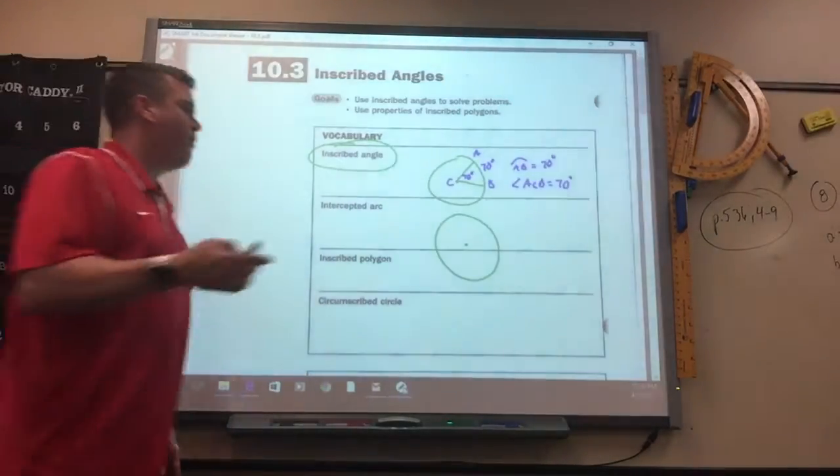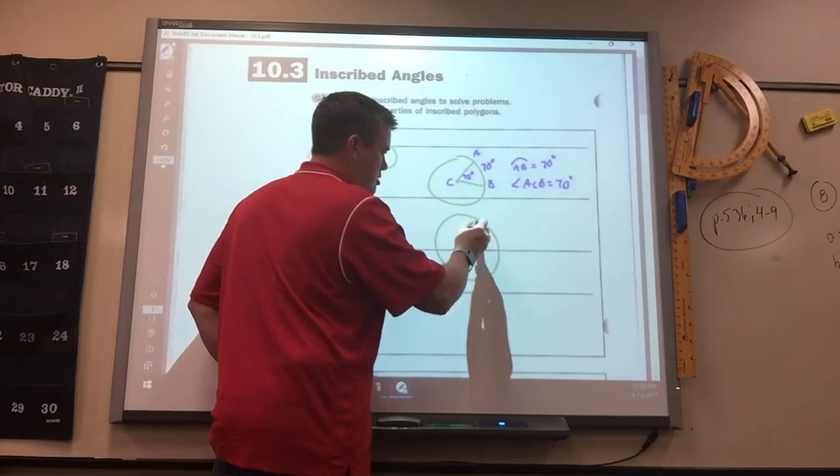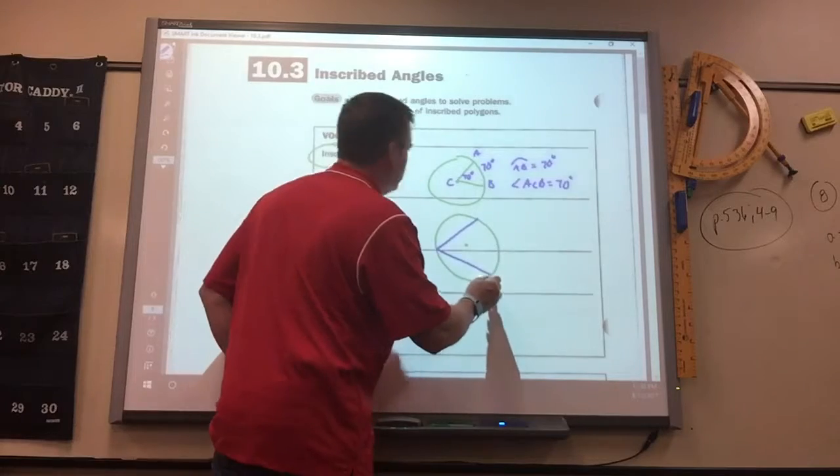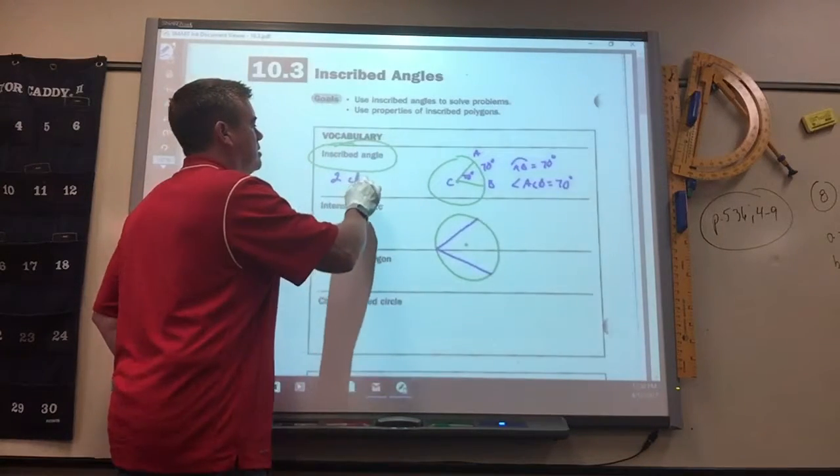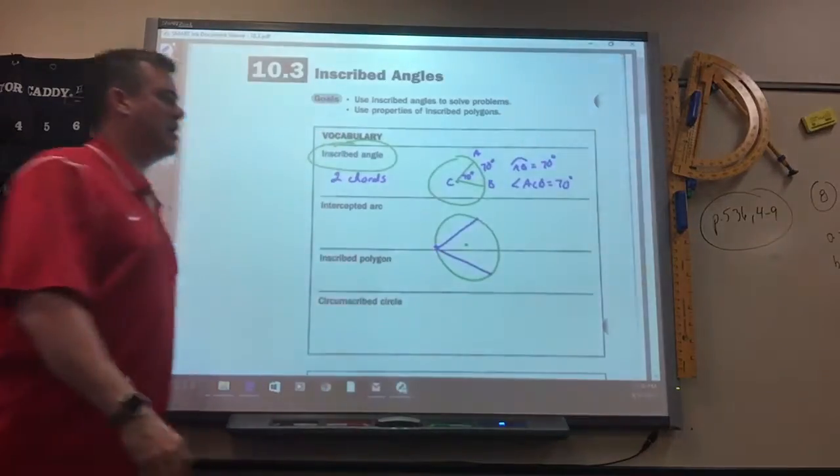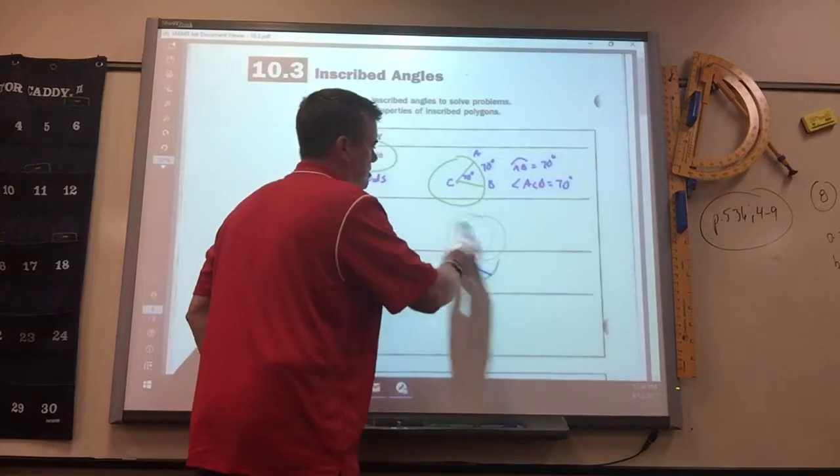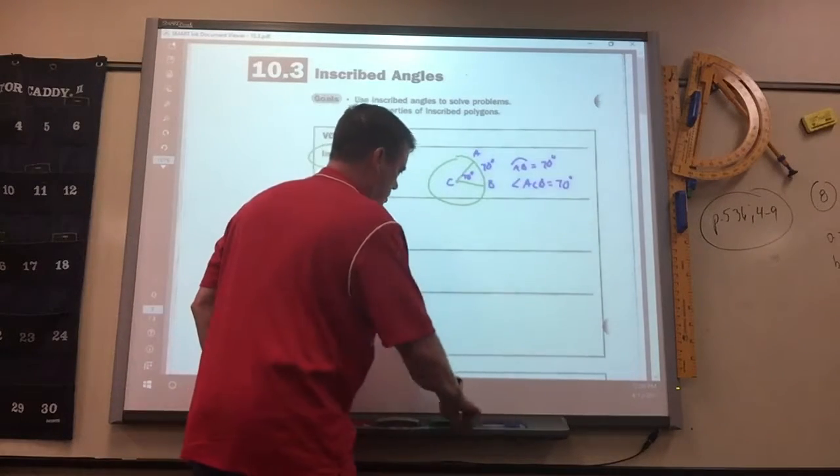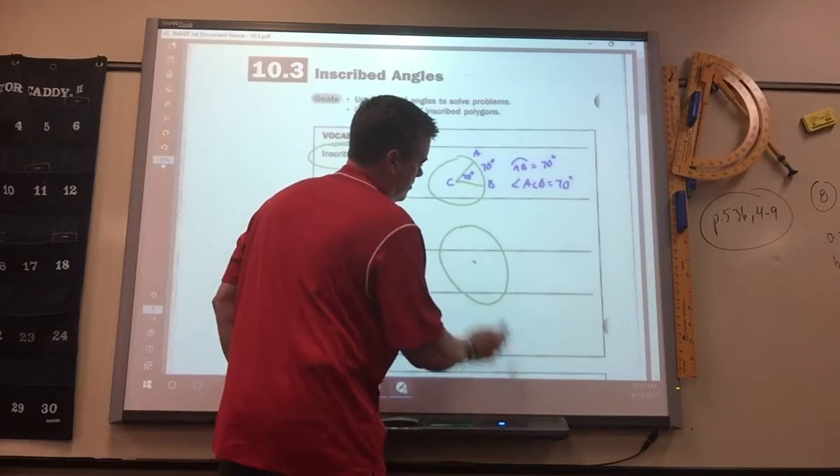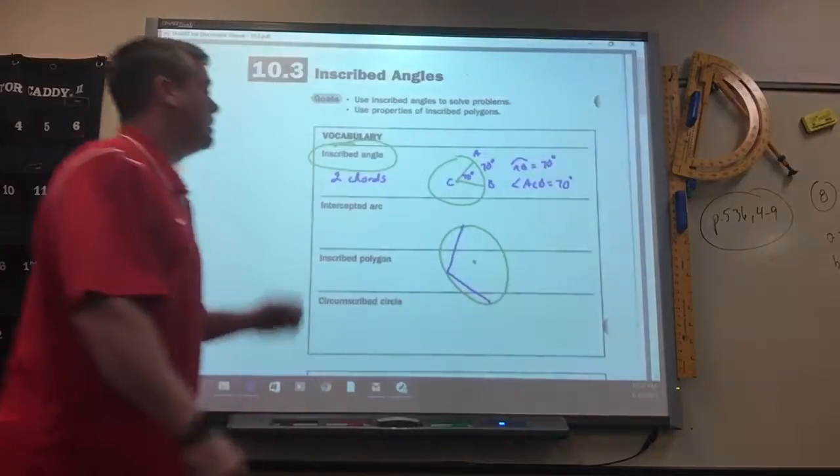Inscribed means inside. So an inscribed angle is two chords that form an angle. That just means the vertex is on a side. Now let me do a little better one. We can figure out what the answer is. I didn't draw a very good circle.